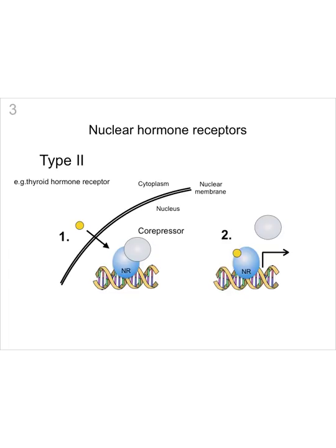The other kind are type 2 nuclear hormone receptors, an example being the thyroid hormone receptor. The thyroid hormone receptor is constitutively bound to its DNA target; however, it is always bound in the inactive state along with a corepressor protein, which prevents it from activating transcription. When thyroid hormone enters the cytoplasm and then the nucleus, it binds to the nuclear receptor, dissociating the corepressor and thus allowing transcription to occur.